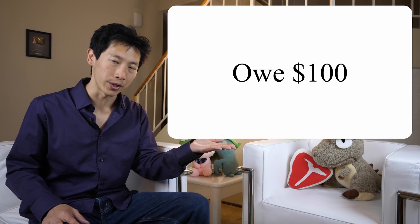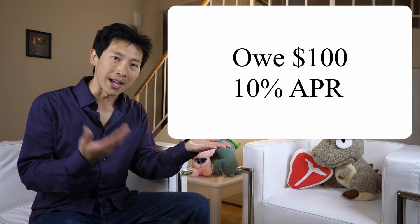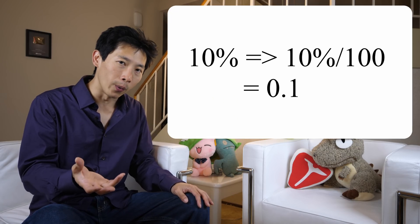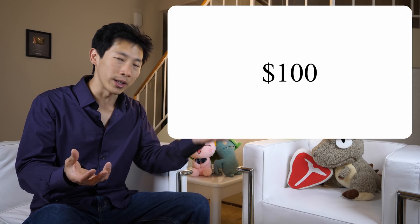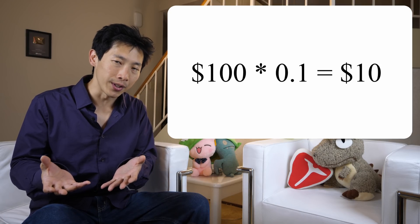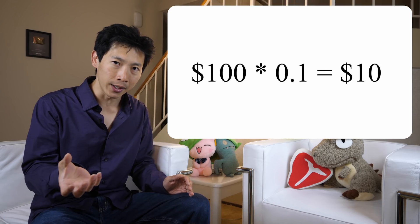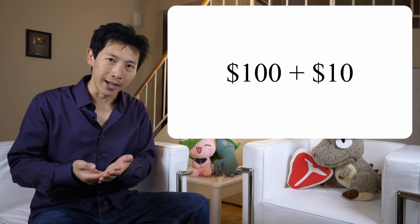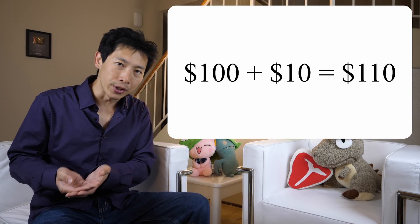Let's start with a simple interest calculation. Let's say you owe the credit card $100 and the interest rate is 10% APR every year. 10% is 0.1, so $100 times 0.1 is $10 of interest. Then you add this $10 back to the principal, so you have 100 plus 10, which is $110 that you finally owe.